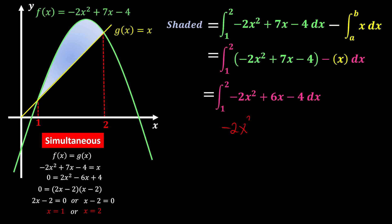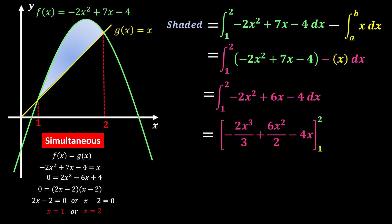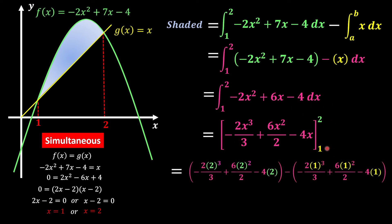The power increases by 1 divided by the new power — x to the power of 1 becomes x squared over 2, and 6x integrates to 6x squared over 2, minus 4x. The boundary is from 1 to 2. Taking the upper limit minus the lower limit and plugging into a calculator, we get 1 over 3 units squared as our answer — the area bounded by the curve and the line.